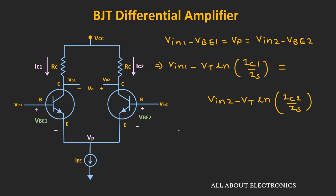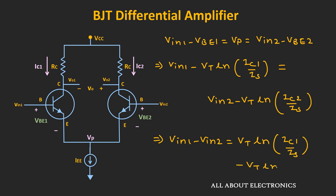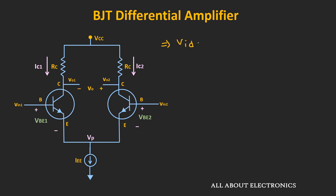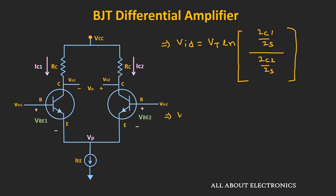Rearranging the expression, Vin1 minus Vin2 equals Vt times natural log of Ic1 divided by Is, minus Vt times natural log of Ic2 divided by Is. Since Vin1 minus Vin2 is the differential input voltage Vid, we can say that differential input voltage Vid equals Vt times natural log of Ic1 divided by Ic2.